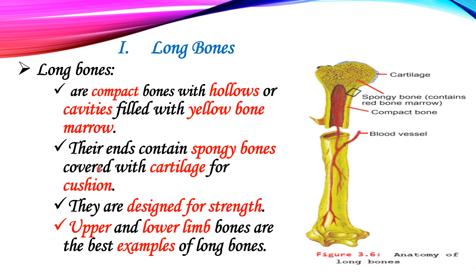The ends of long bones contain sponge bones covered with cartilage. The sponge contains the red bone marrow. These are the blood vessels, and this is designed for strength.